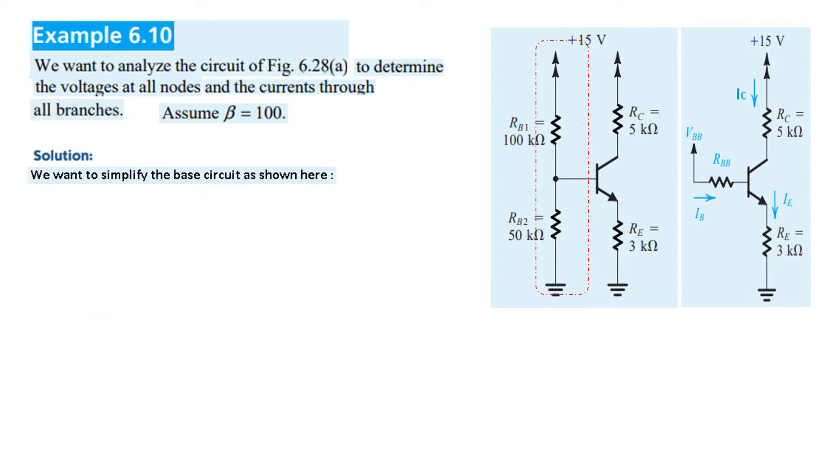What we want to do is reduce this circuit in a simpler form. To do that, we have to resolve this part with the help of Thevenin's theorem. If you recall, the Thevenin's theorem will look like this: 15 volts with two resistances, 100kΩ and 50kΩ. We want the voltage across 50kΩ, we will treat this as a load.